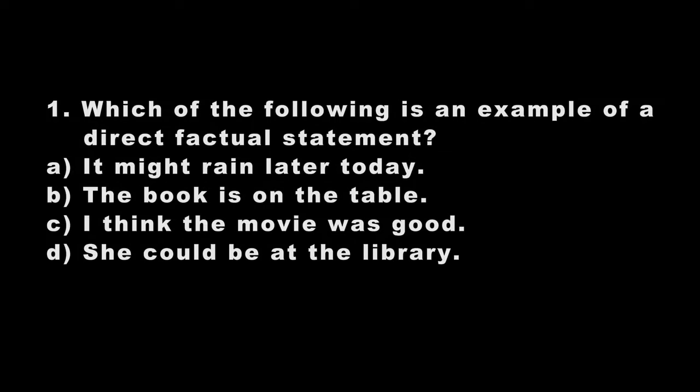Now we also have direct factual statements. The first type we covered was indirect factual statement, which can also be considered verbal irony. A direct factual statement is when you declare something and that is exactly what it is. To test your knowledge, drop the answer in the comments: which of the following is an example of a direct factual statement? A — it might rain later today; B — the book is on the table; C — I think the movie was good; D — she could be at the library.